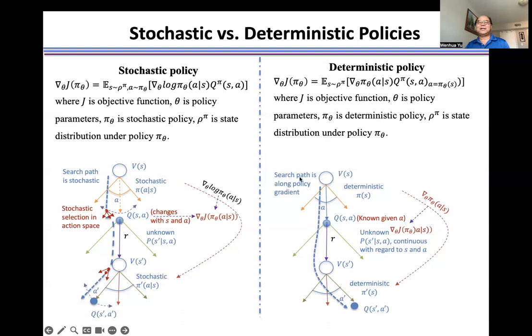That means in the deterministic policy, we know the better policy. We search along the policy gradient in the direction because we know which direction the policy changes fast. And we can easily modify this derivative of the objective function, directly calculating the policy derivative with regard to the policy parameters. That means we know the exact direction to search the good policy.